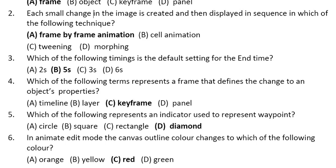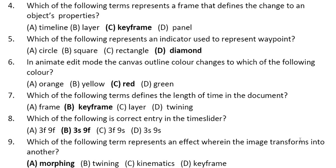Question 5: Which of the following represents an indicator used to represent a wave point? The answer is diamond — it is actually a square-type shape which the textbook author calls a diamond shape; it is a yellowish-orange shape. Question 6: In animation edit mode, the canvas outline color changes to which color? It changes to red. A red border is applied over the canvas when we go to animation edit mode.